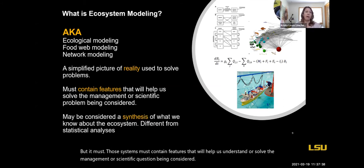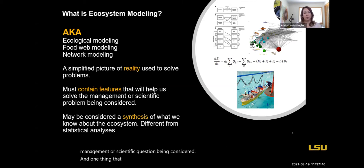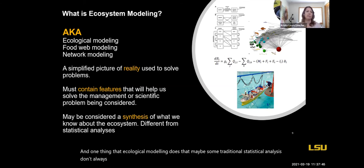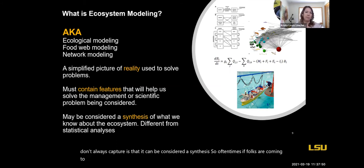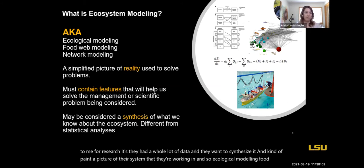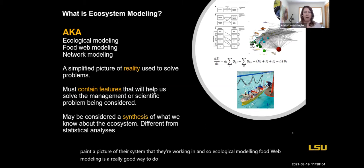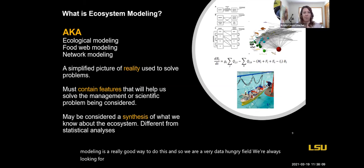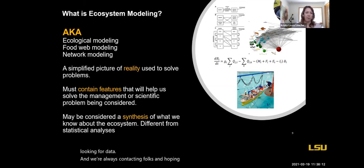One thing that ecological modeling does that maybe some traditional statistical analyses don't always capture is that it can be considered a synthesis. Oftentimes folks come to me for research with a whole lot of data, and they want to synthesize it and paint a picture of their system. Food web modeling is a really good way to do this, and we are a very data-hungry field, always looking for data and hoping for collaborations in that way.